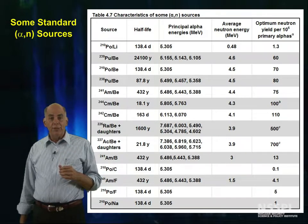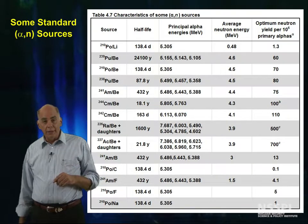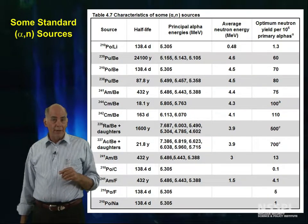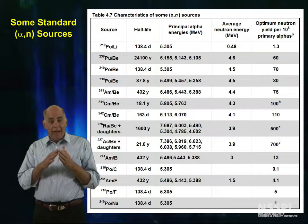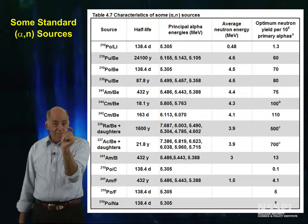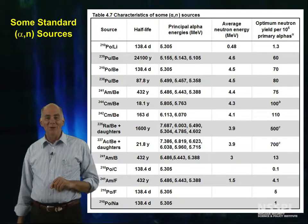These alpha-N sources are even more dependent on geometry than the alpha-N reaction with neighboring actinides. You have to get the alpha out of the actinide and into the target, and you only have tens of micrometers to work with.